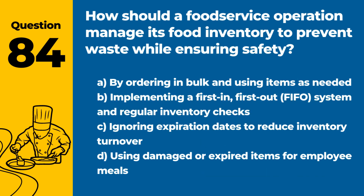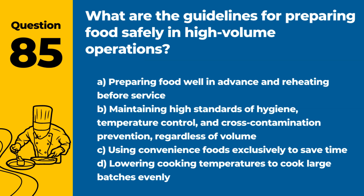Question 84. How should a food service operation manage its food inventory to prevent waste while ensuring safety? Answer: B. Implementing a first-in, first-out (FIFO) system and regular inventory checks. This approach helps manage inventory effectively, ensuring food safety and reducing waste.